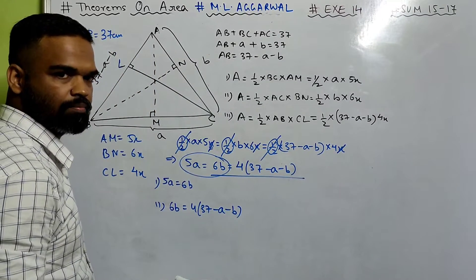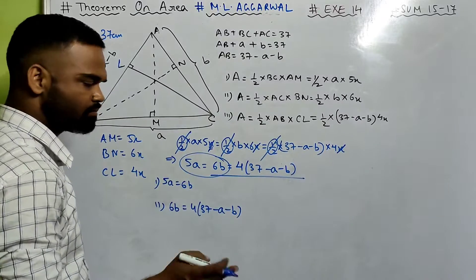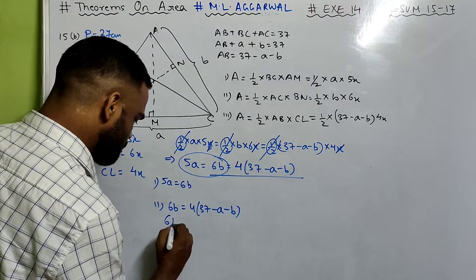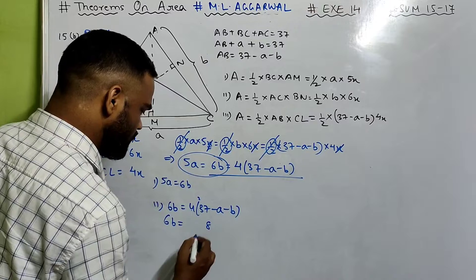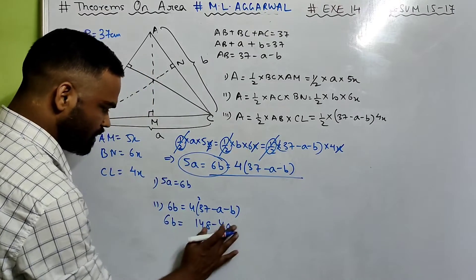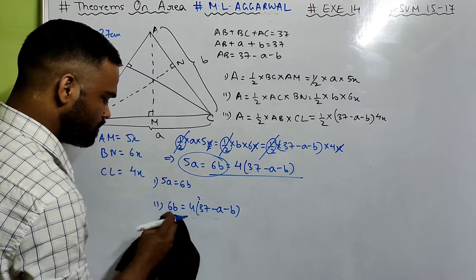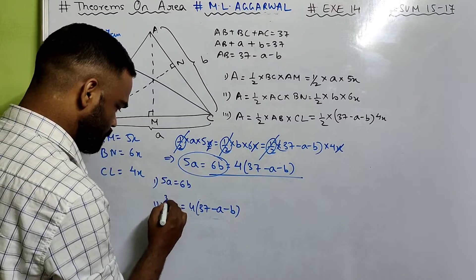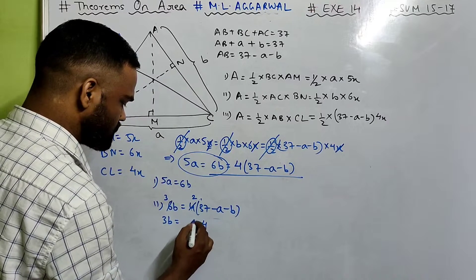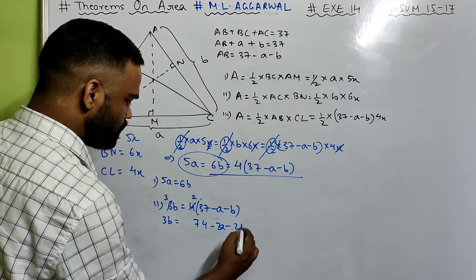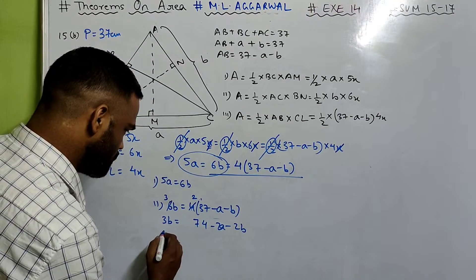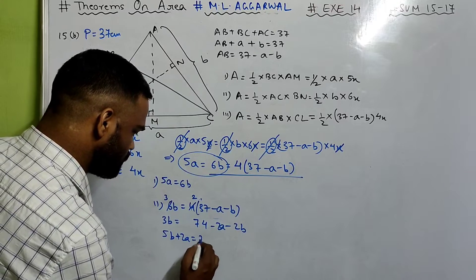Because we have two unknowns we need two equations. Simplifying: 6b equals 148 minus 4a minus 4b. Dividing through by 2: 3b equals 74 minus 2a minus 2b. Bringing terms to one side: 5b plus 2a equals 74. So our two equations are: 5a minus 6b equals 0, and 2a plus 5b equals 74.